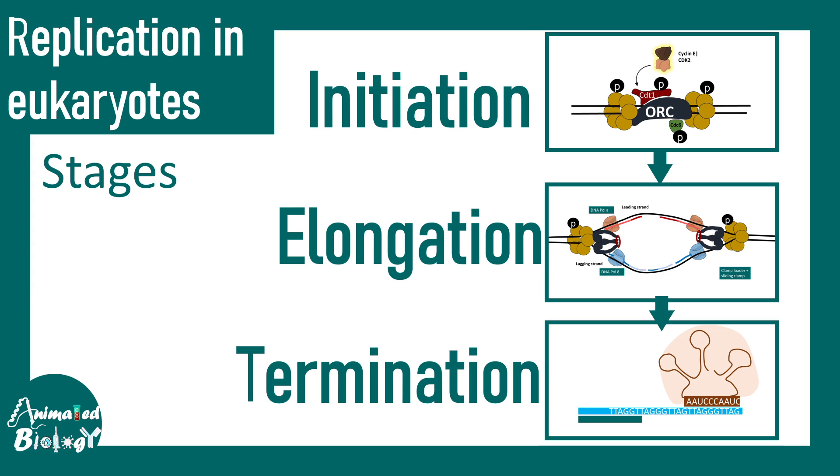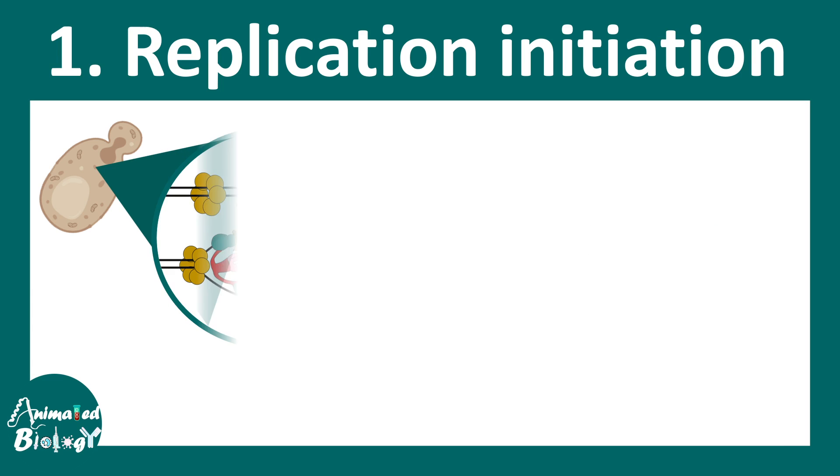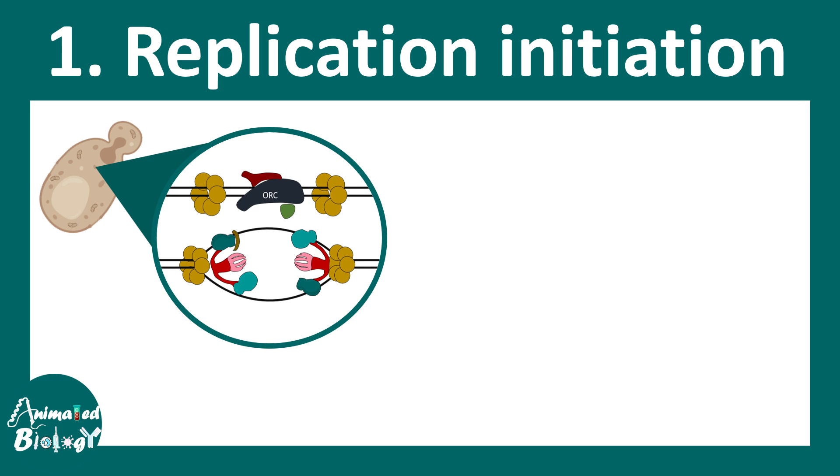So let's begin with initiation. In eukaryotes, the replication initiation is pretty complex because replication happens in a restricted time point in the cell cycle. That means in the S phase of the cell cycle. In any other particular stage of the cell cycle, replication is not happening. But have you ever wondered why replication only happens in the S phase? Why not in other phase? What prevents replication to be restricted in S phase? You would get the answer soon.